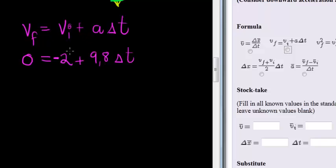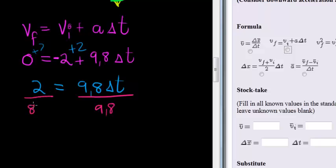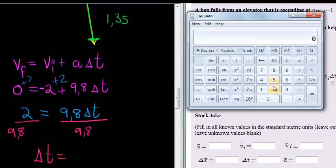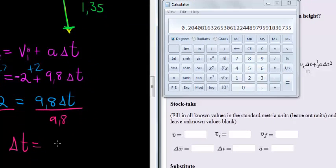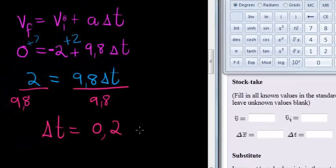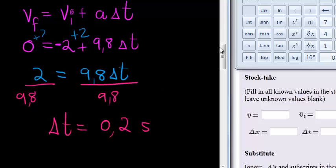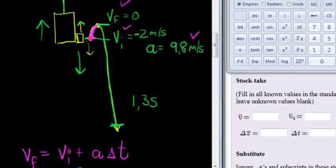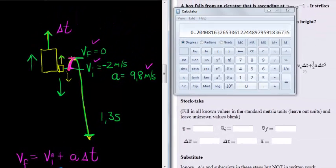To solve delta t, we add 2 on both sides to get rid of the negative 2. So we get that 2 is equal to 9.8 delta t. To solve for delta t, now we are going to have to divide both sides with 9.8. Dividing both sides with the 9.8 gives me delta t is equal to, let's use our calculator, 2 divided by 9.8 gives me 0.204 seconds. So 0.204 will round to 0.2 seconds. That's how long it's going to take from when it's dropped until it reaches its maximum height.